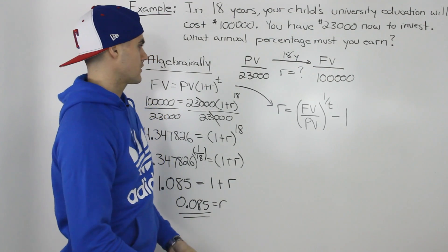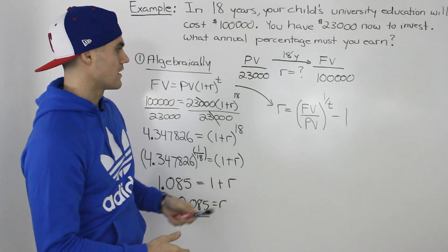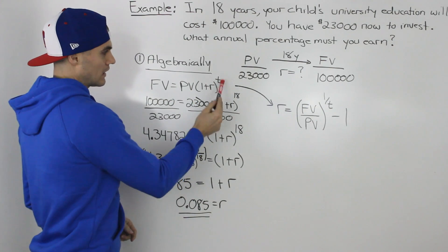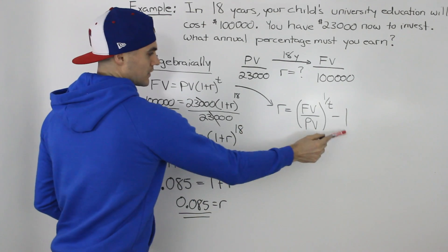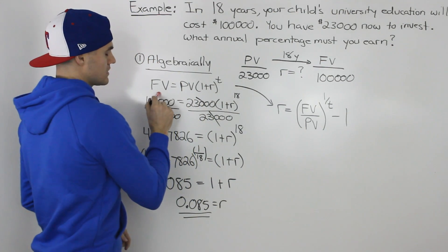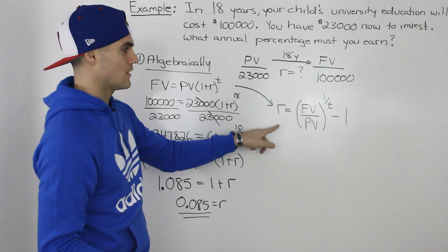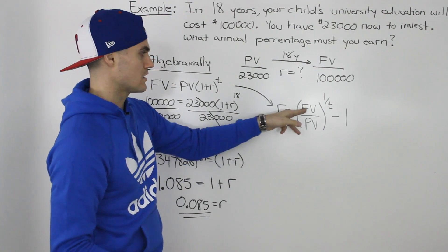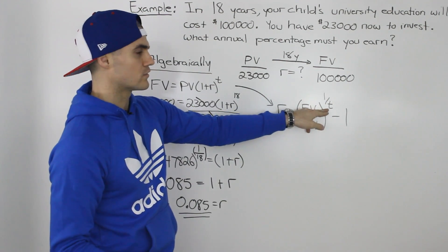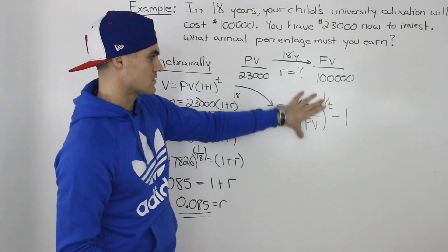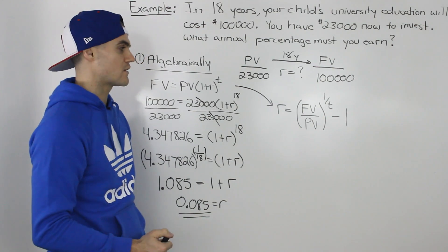Algebraically, another thing you could have done before plugging in all the numbers is isolate for R with the formulas. You would divide both sides by the present value, take it to the power of 1 over T, then subtract 1. This is the formula from the compound interest formula where we've isolated for R. Then we can just plug in everything: 100,000 for future value, present value $23,000, 1 over T value of 18, then subtract 1. We get the same answer of 0.0854 or 8.5%.